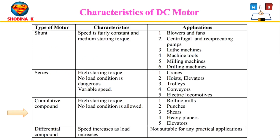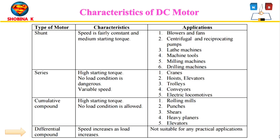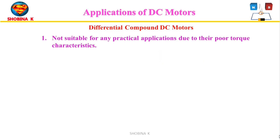The cumulative compound DC motor is good for adjustable varying speed, with speed regulation varying from 25% to 30%. Its starting torque is also high like the DC series motor. It is used in shears, heavy planers, rolling mills, and elevators. The differential compound DC motor has almost constant torque and speed, but its two fluxes oppose each other, so the resultant flux decreases as load increases, causing the machine to run at higher speed under higher load. This property is dangerous at full load, as the motor will try to run at dangerously high speed, making it not suitable for practical applications.